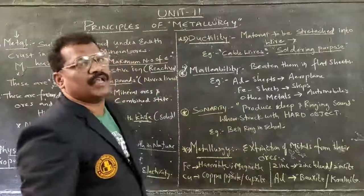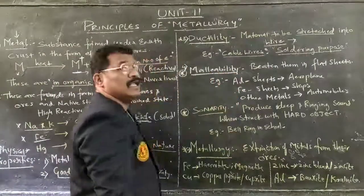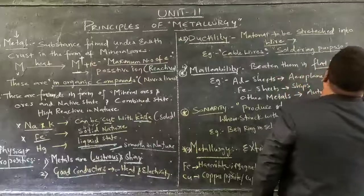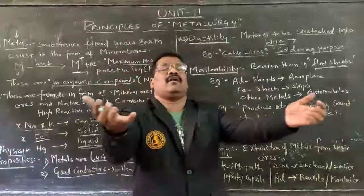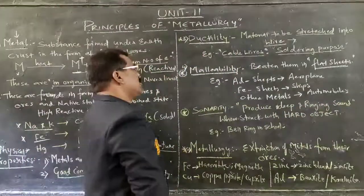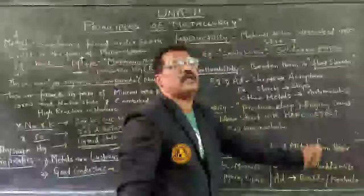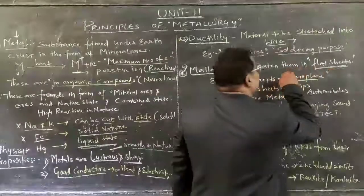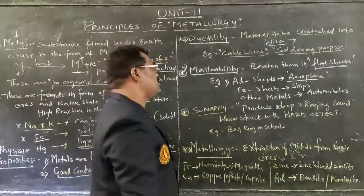Coming to the fourth property: metals have the property of malleability. Malleability means any strong metal, if beaten, can be converted into flat sheets by increasing the width and decreasing the thickness. For example, aluminium, when hammered continuously, can be converted into aluminium sheets which are useful for manufacturing aeroplanes.